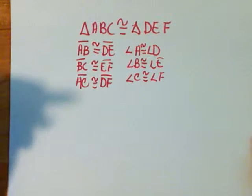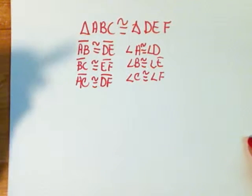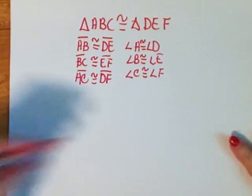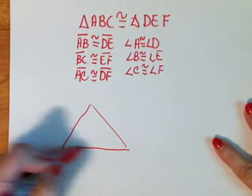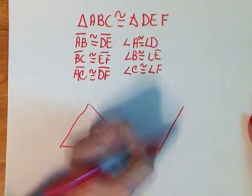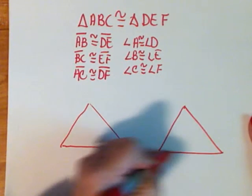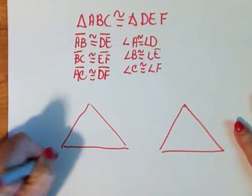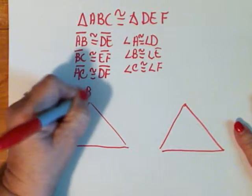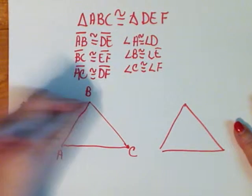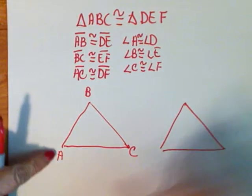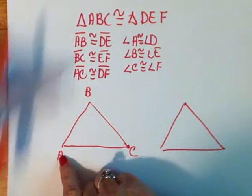From these six congruent statements, I can draw triangles that are congruent. Note that my pictures really don't matter, but I'm just going to draw two pictures and I'm going to label this triangle A, this part B, and this part C. Now my parts have to be located the same way.